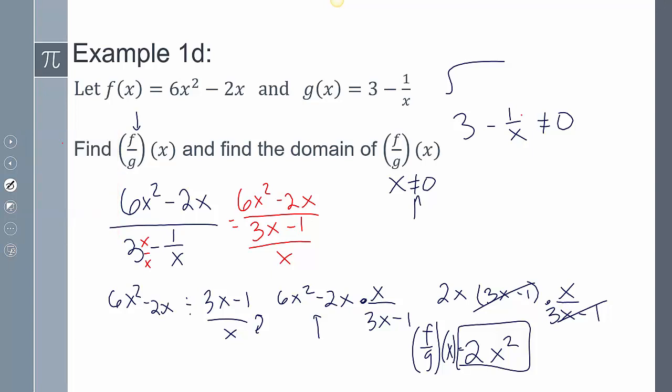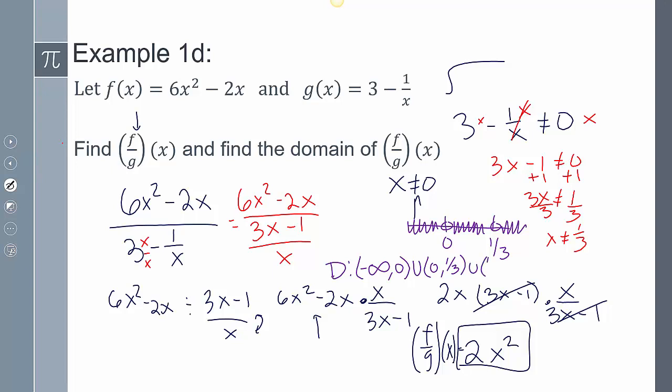This one's already can't equal 0, so I want to solve for this one. I want to multiply everything by x, so I get 3x - 1 can't equal 0. Add 1 to both sides, 3x can't equal 1. Divide both sides by 3, x can't equal 1/3. So now looking at on a number line, open circle at 0, open circle at 1/3, and everything else is shaded. So my domain is going to be from negative infinity to 0, union from 0 to 1/3, union from 1/3 to positive infinity.